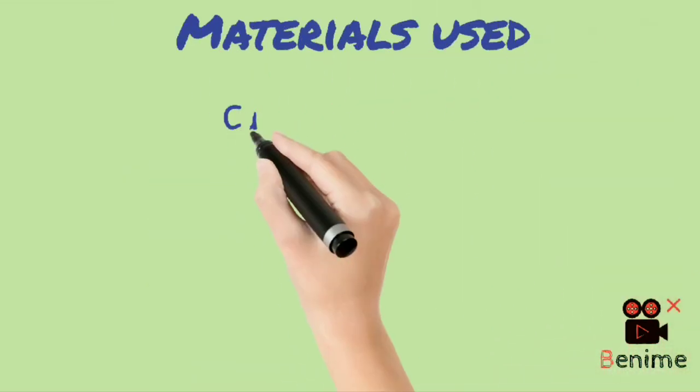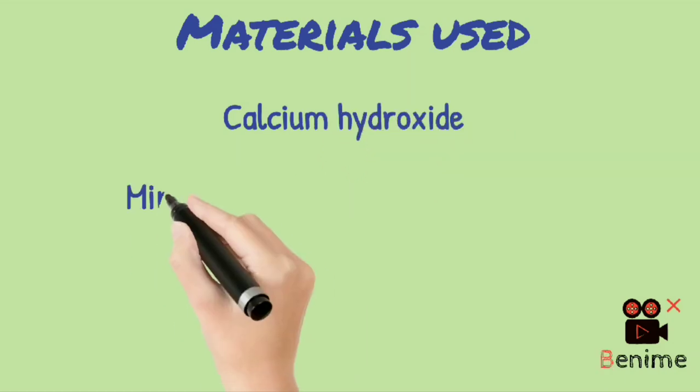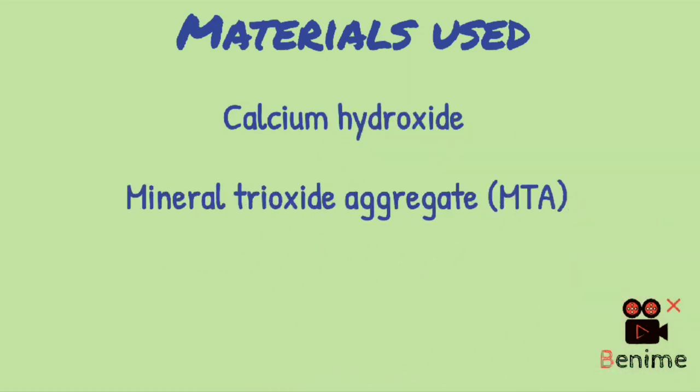Now we will see for this procedure what are the materials used. Several materials have been used as per the book, such as collagen calcium phosphate gel or tricalcium phosphate, yet none is as effective in promoting a calcific barrier as calcium hydroxide and MTA. In clinics, calcium hydroxide and MTA is the only used material for apexification.